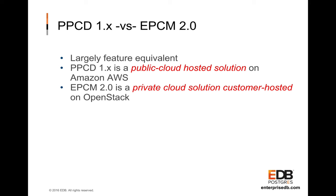If you're already familiar with Postgres Plus Cloud Database, you might be wondering how EnterpriseDB Postgres Cloud Management differs. The short answer is that they are largely feature equivalent. The primary difference is that PPCD provides a public cloud-hosted solution on Amazon AWS, while EPCM provides a private cloud solution that is customer-hosted on OpenStack. EPCM runs within a customer's private network.